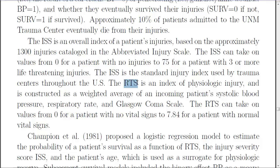The RTS, the revised trauma score, is an index of physiological injury, and is constructed as a weighted average of the incoming patient's systolic blood pressure, respiratory rate, and Glasgow coma scale. The RTS can take values in the opposite direction - zero for a patient with no vital signs, basically someone who is dead, to 7.84 if you are perfectly healthy. So the ISS goes from zero to 75, increasing with injury, and the RTS increases to a healthy person, or decreases with injury.